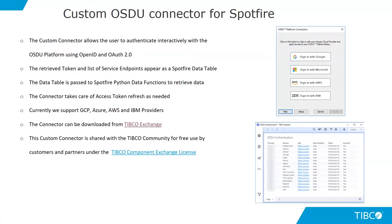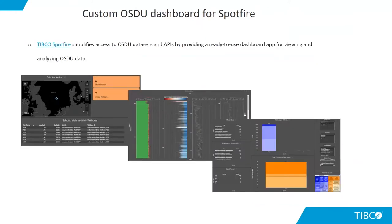I'll be showing a demo explaining how most of our offerings work within the Spotfire client. The second offering is a custom OSDU dashboard for Spotfire. This dashboard makes use of all the service endpoints you get from the OSDU connector, and it allows you to create Python data functions. A Python data function is a method for calling Python from within the Spotfire client, allowing Spotfire users to interactively call Python to greatly enhance the visual experience and analytics within Spotfire.